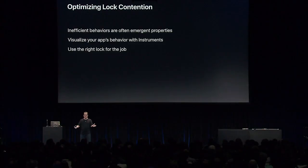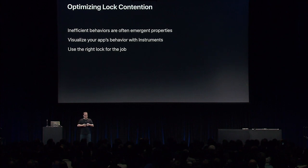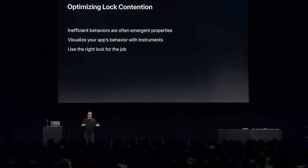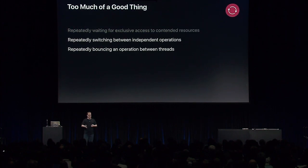These inefficient behaviors are often emergent properties of your application — not easy to find just by looking at your code. You should observe your application in Instruments System Trace to visualize its true real behavior and use the right lock for the job. Now, to discuss other ways apps can experience excessive context switching, I'll bring up my colleague Daniel Steffen to talk about how to organize your concurrency with GCD to avoid these pitfalls.